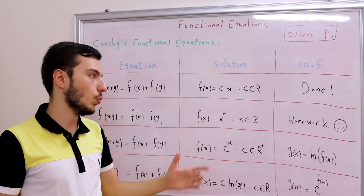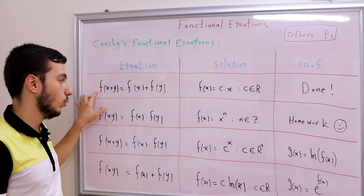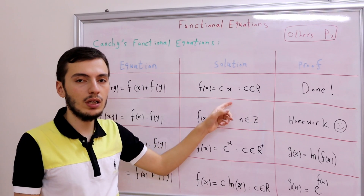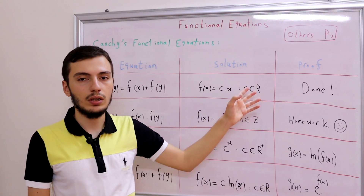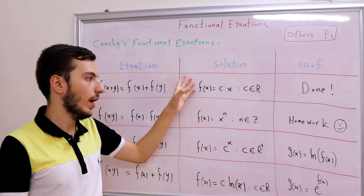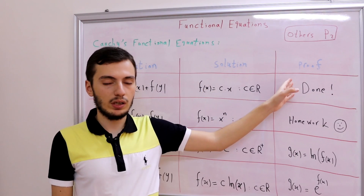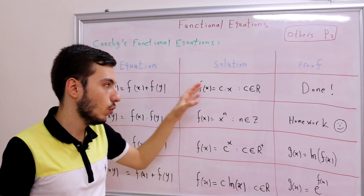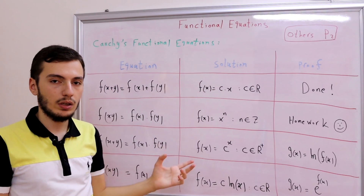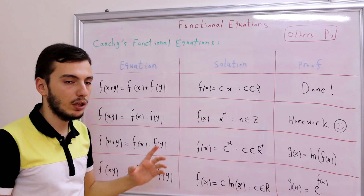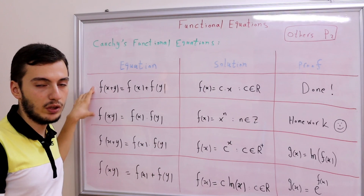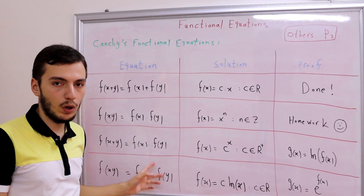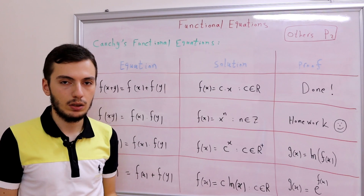The first equation was f(x+y) = f(x) + f(y), and we discussed in the previous video that the solution is f(x) = cx, where c is a real constant. We proved this and discussed solving it on ℚ→ℚ versus ℝ→ℝ. The second and third equations are the most important ones in practice, because the third and fourth appear rarely in math olympiad contests.